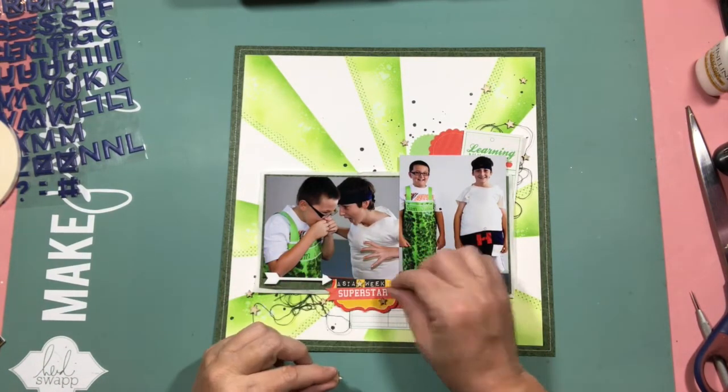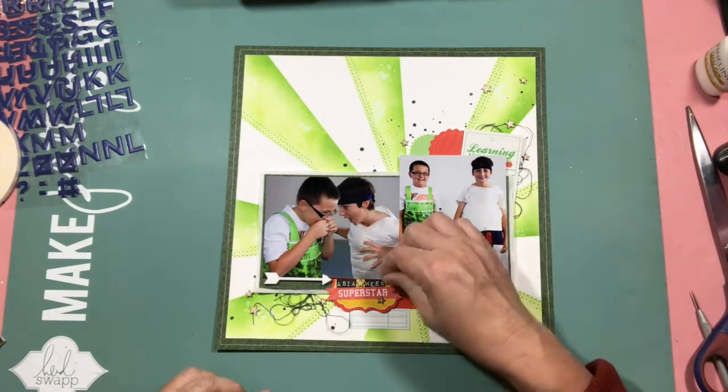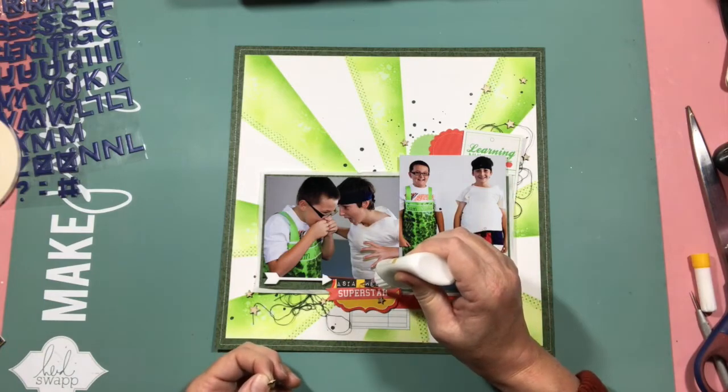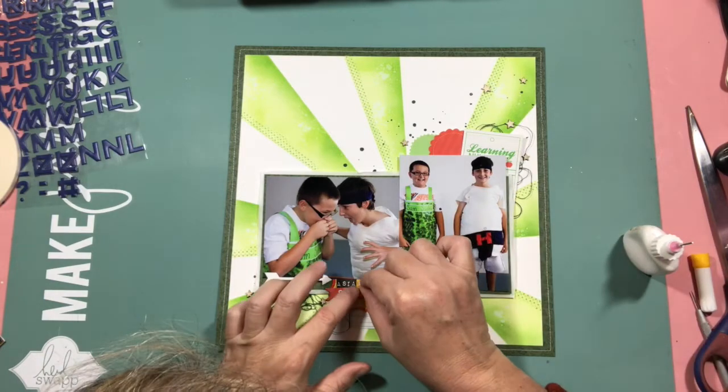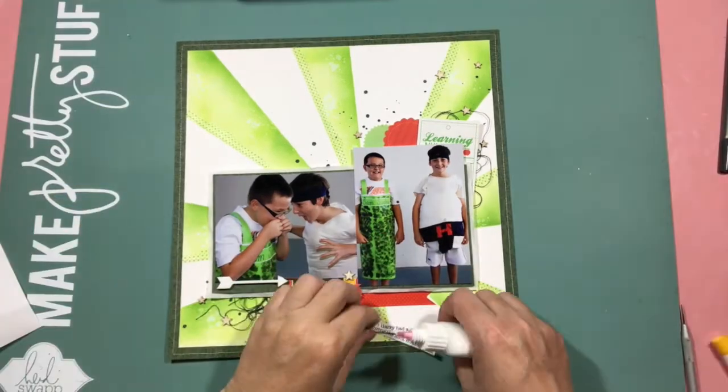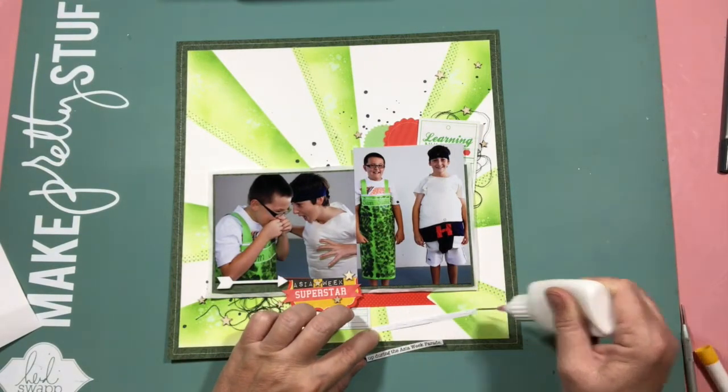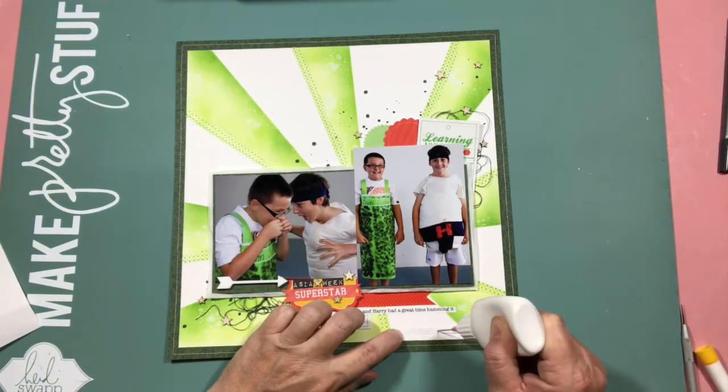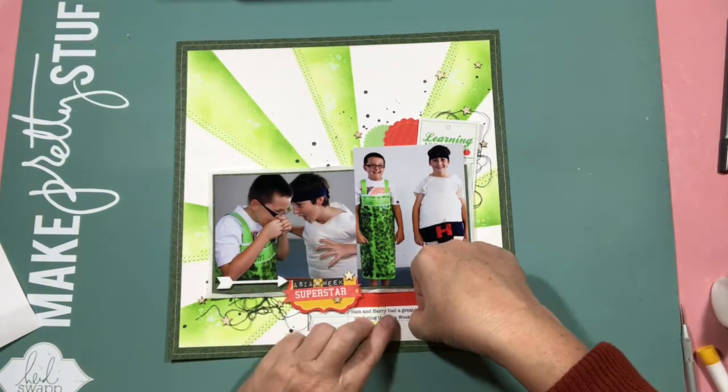Because I wanted that superstar word, I was really impressed I found a sticker from that range that said superstar. I pulled out some little wooden Studio Calico stars and glued them on as well. I did a little tiny bit of typing which says Sam and Harry had a great time hamming it during the Asia Week parade.